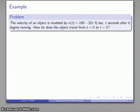So how does that translate into practical terms? Well, let's take an example. The velocity of an object is modeled by v(t) = 100 - 32t ft/sec, t seconds after it begins moving. How far does the object travel from t = 0 to t = 3? And so since this is a calculus class, we have questions about derivatives and tangent lines and definite integrals, and not one word of those appears anywhere in this question.